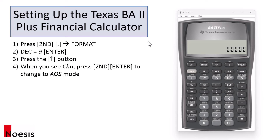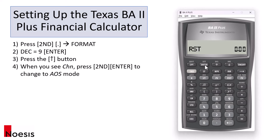If your calculator gets reset, you would have to set it up for two things mainly. One would be the decimal places, and the other one would be the AOS mode, or the algebraic operating system. For example, if your calculator is reset — you press second plus minus, so there'll be a reset — then press enter. The calculator gets reset to the default mode, which has a decimal place of two.